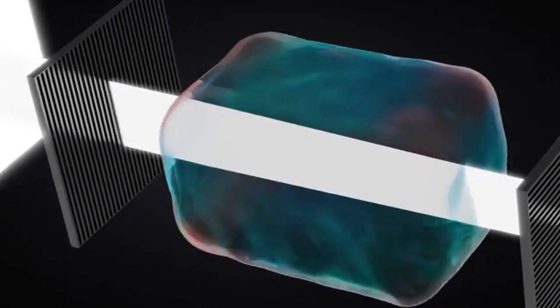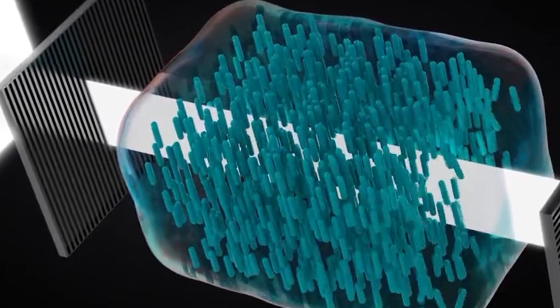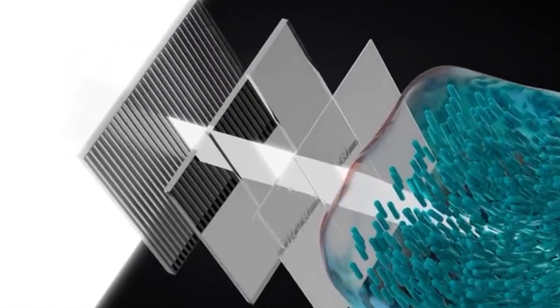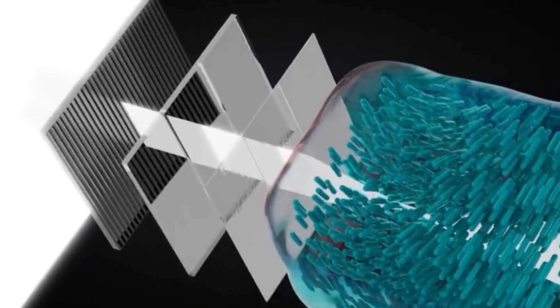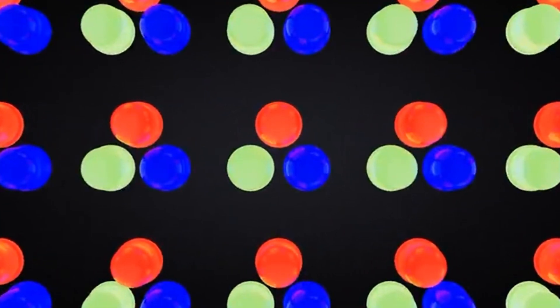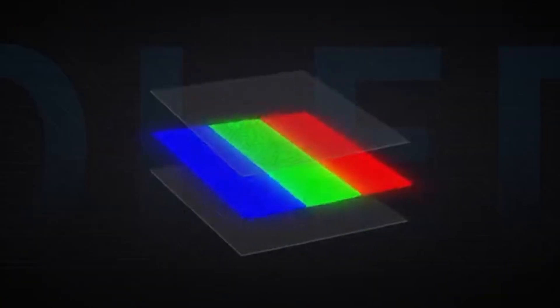LCD technology uses cold cathode fluorescent lamps, CCFL. It is these CCFLs which are responsible for backlighting and subsequently creating the picture you see on the screen. Ideally, the CCFL is like a small fluorescent bulb. Contrary, LED displays use light emitting diodes for backlighting, which create the images you see on your screens. To improve this technology further, we have OLED displays — organic light emitting diode displays.